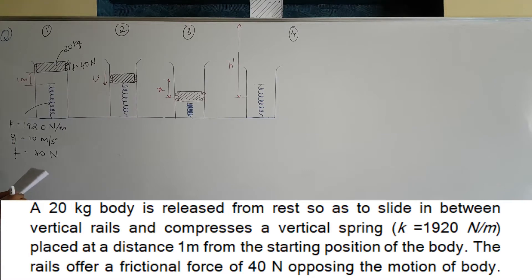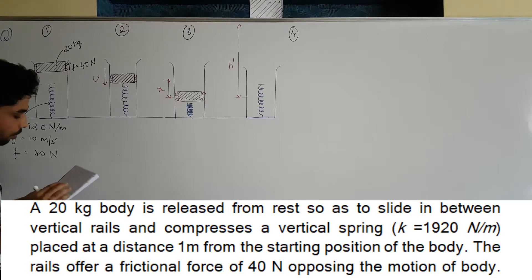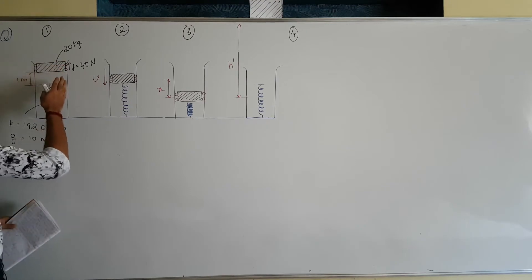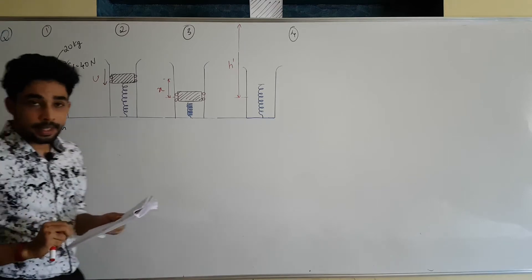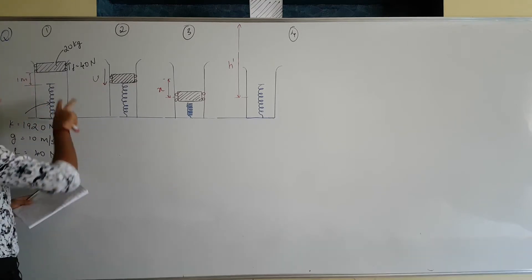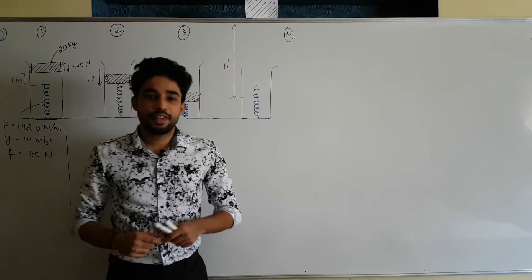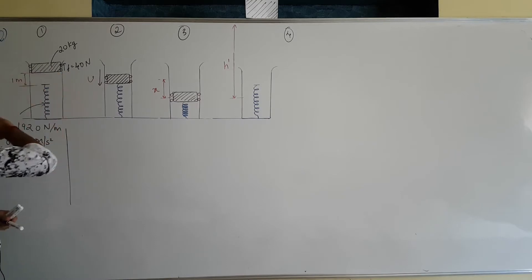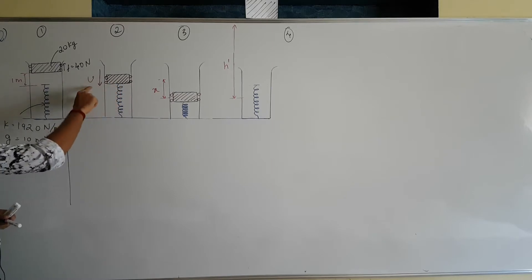The body is released from a height h = 1 meter. The rails offer a frictional force of 40 newtons opposing the motion of the falling body. First, we need to find the velocity of the body just before it strikes the spring — at the point just before it touches the spring.